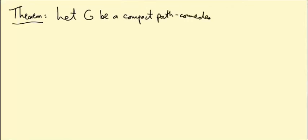Here's a theorem about compact groups. Let G be a compact, path-connected matrix group. Then here are some statements.